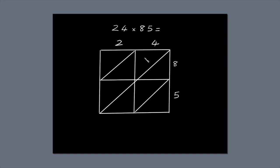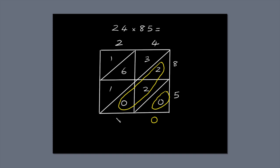Next, multiply and fill in the blanks. Then add up the numbers along the diagonals. Now read off the answer.